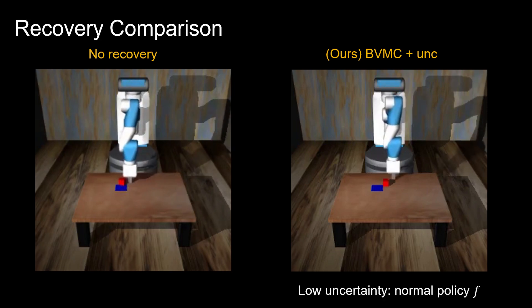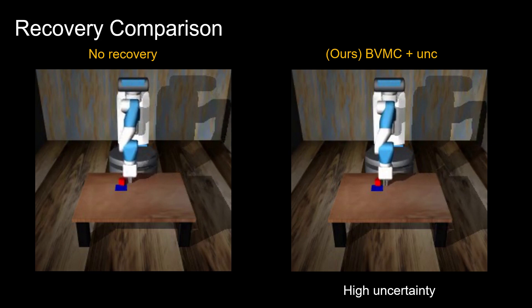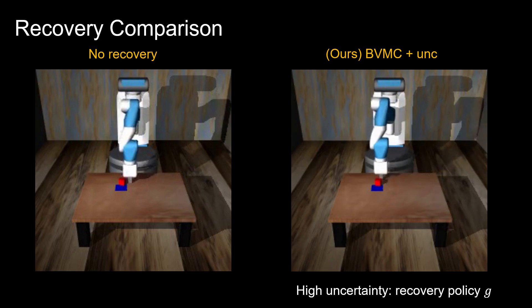On the right, after aligning the cube with the target, the robot monitors a high uncertainty and starts recovery. It backtracks to the most certain position and then follows the action leading to minimum uncertainty for a few steps. The robot is thus brought back to a certain state and it completed the task by executing the normal policy.